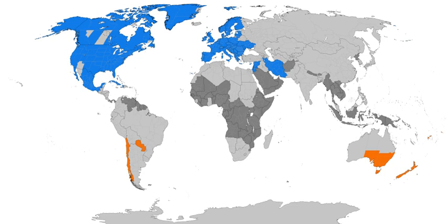Typically, regions that use Daylight Saving Time adjust clocks forward one hour close to the start of spring and adjust them backward in the autumn. In effect, DST causes a lost hour of sleep in the spring and an extra hour of sleep in the fall. George Hudson proposed the idea of Daylight Saving in 1895. The German Empire and Austria-Hungary organized the first nationwide implementation starting on April 30, 1916. Many countries have used it at various times since then, particularly since the 1970s energy crisis.